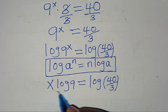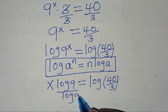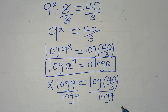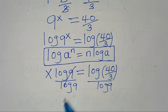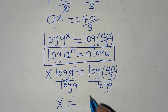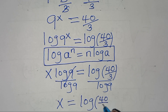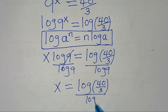Let's divide both sides by log 9, so that x is equal to log of 40 over 3, divided by log 9.